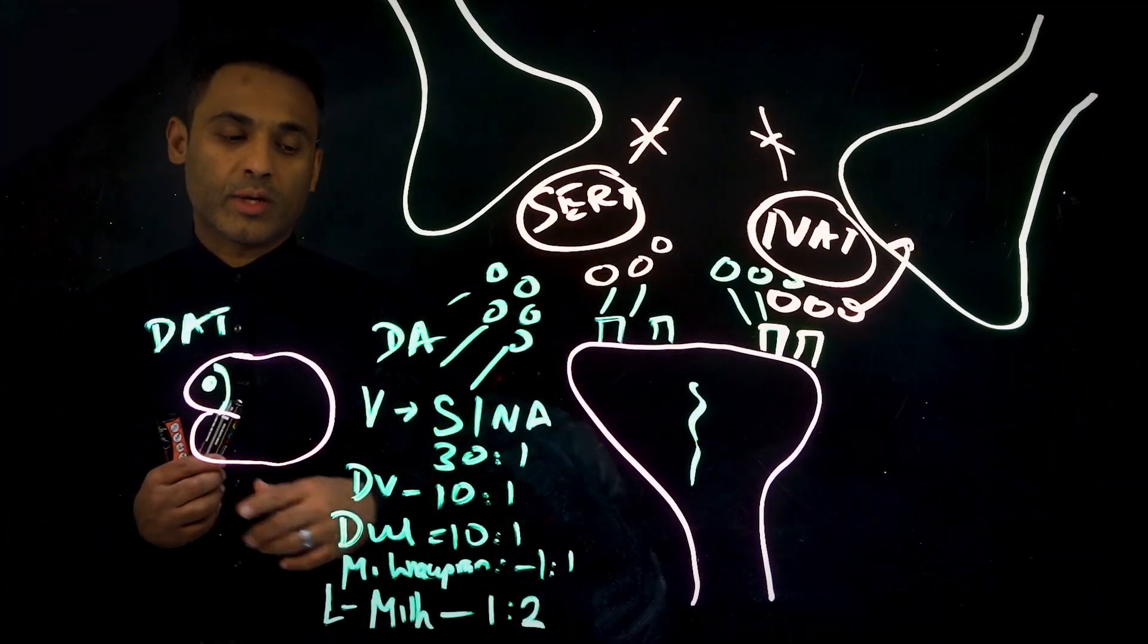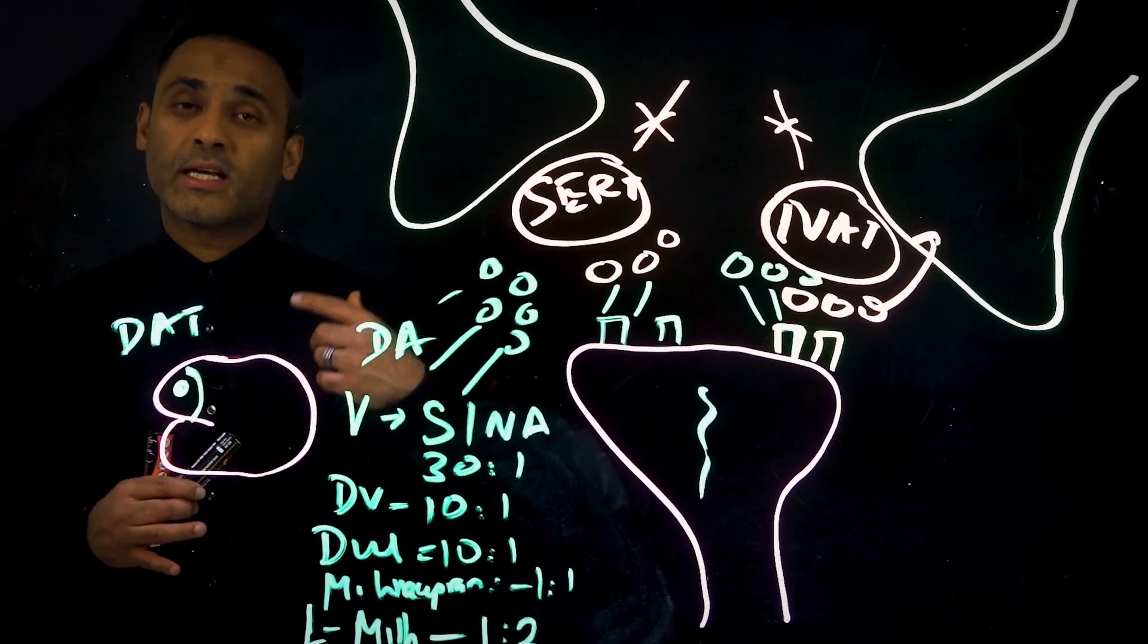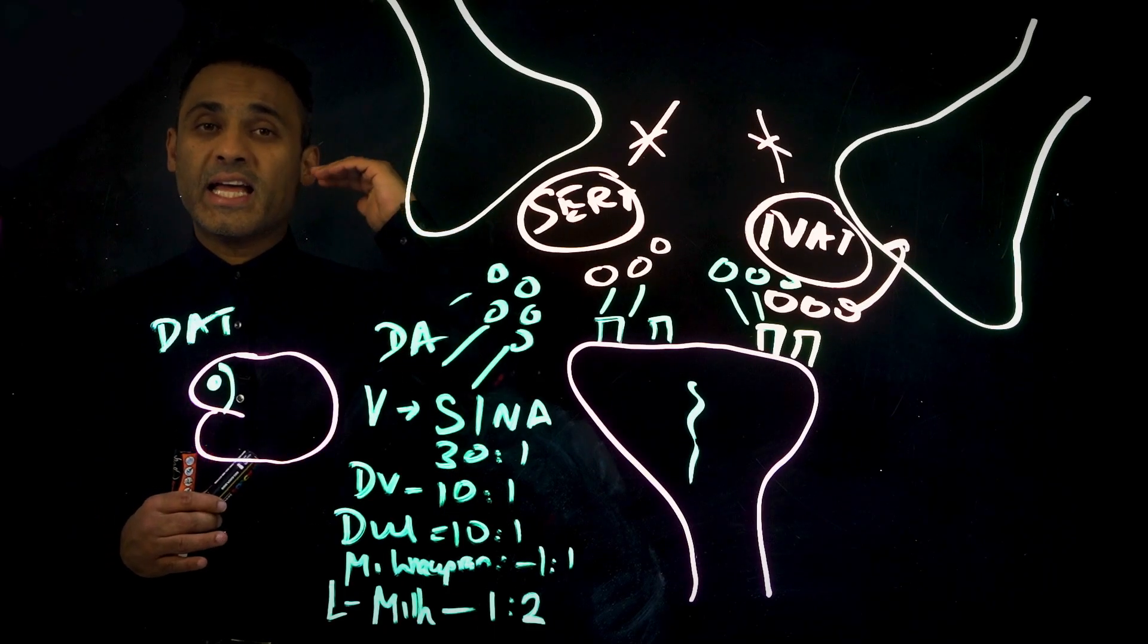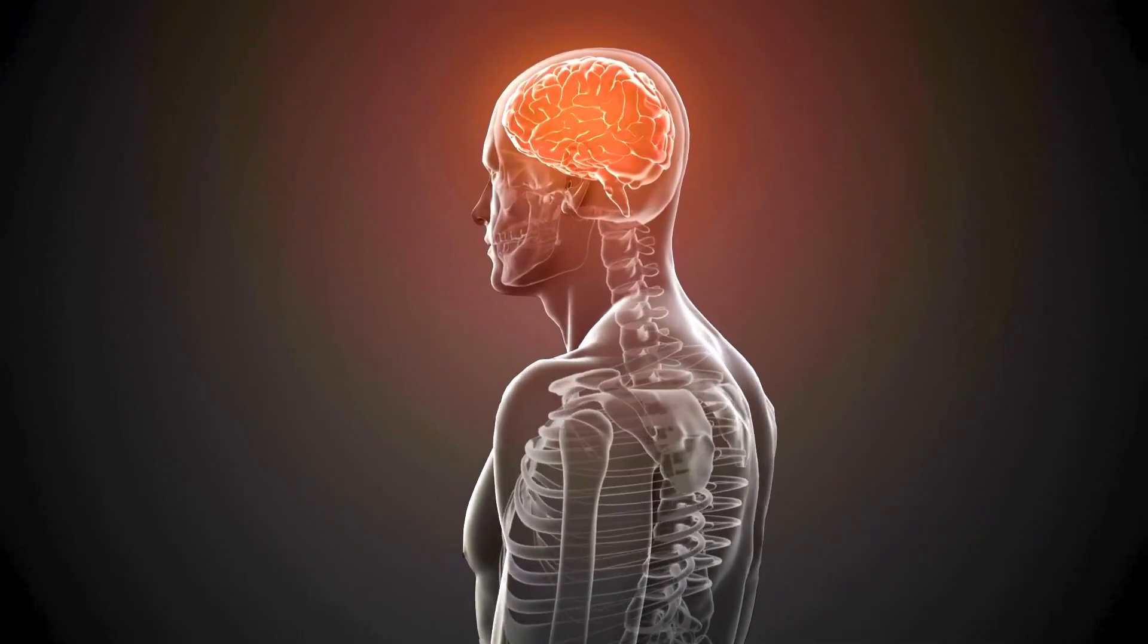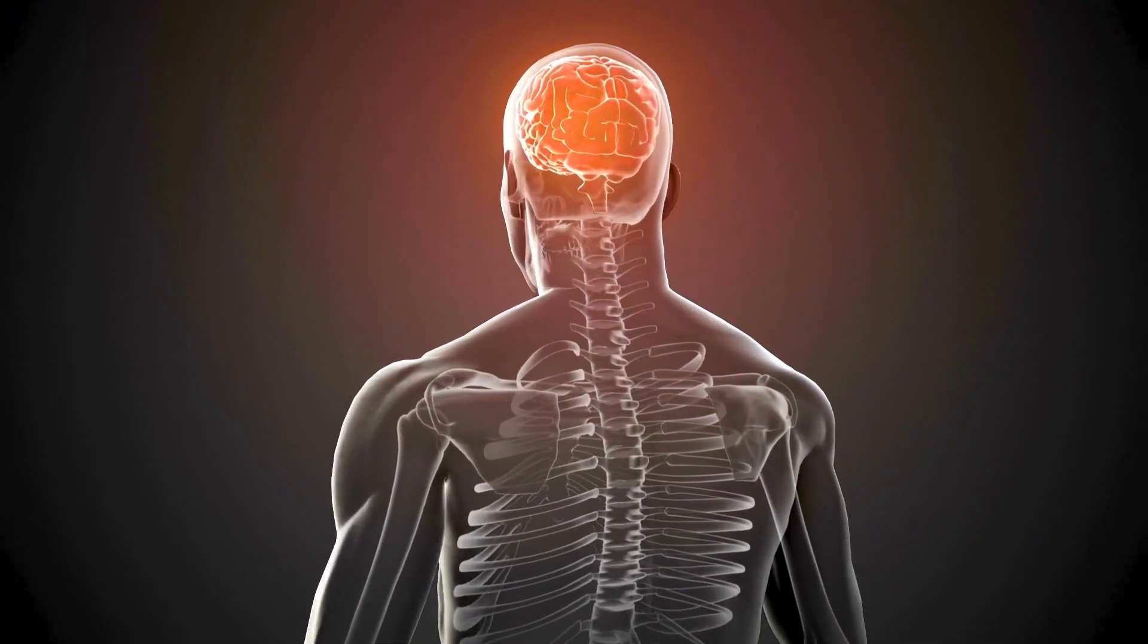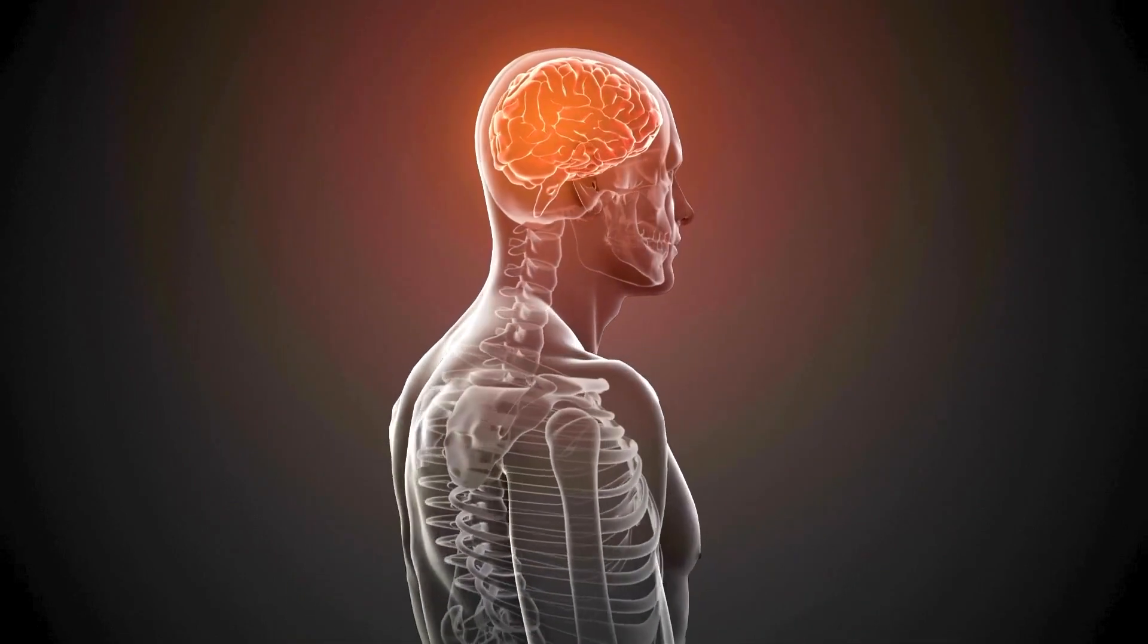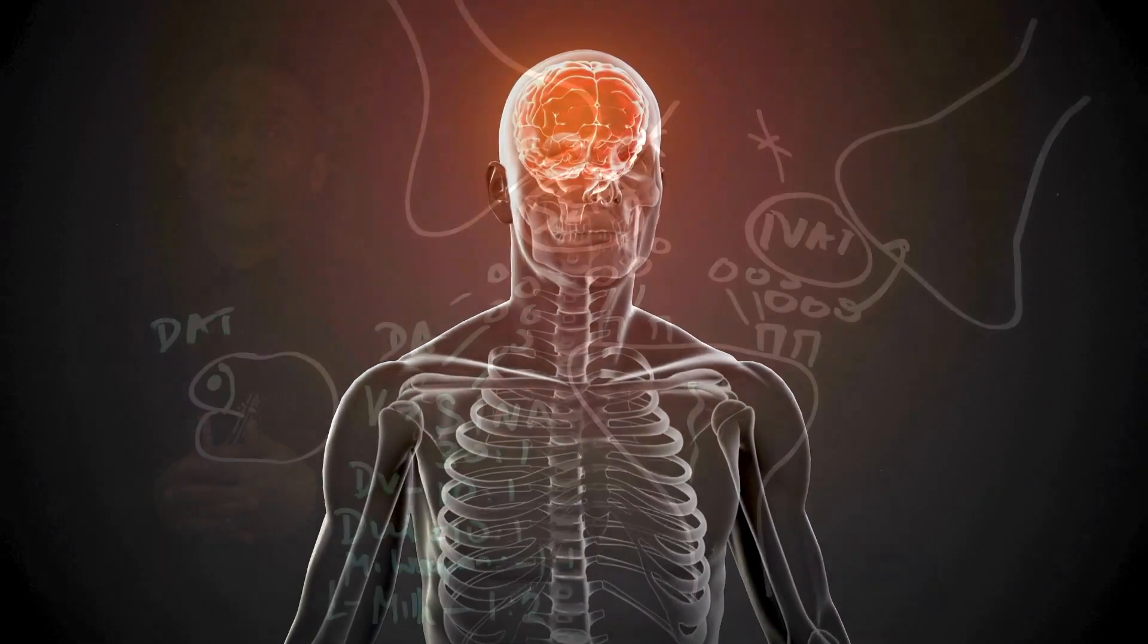The other aspect to take into account: noradrenaline plays a very important role particularly when it activates the alpha-2 receptors because it activates the noradrenergic inhibition of the descending spinal pain neurons. So the pain sensation in the spinal cord is reduced through the action of noradrenaline on the alpha-2 receptors.